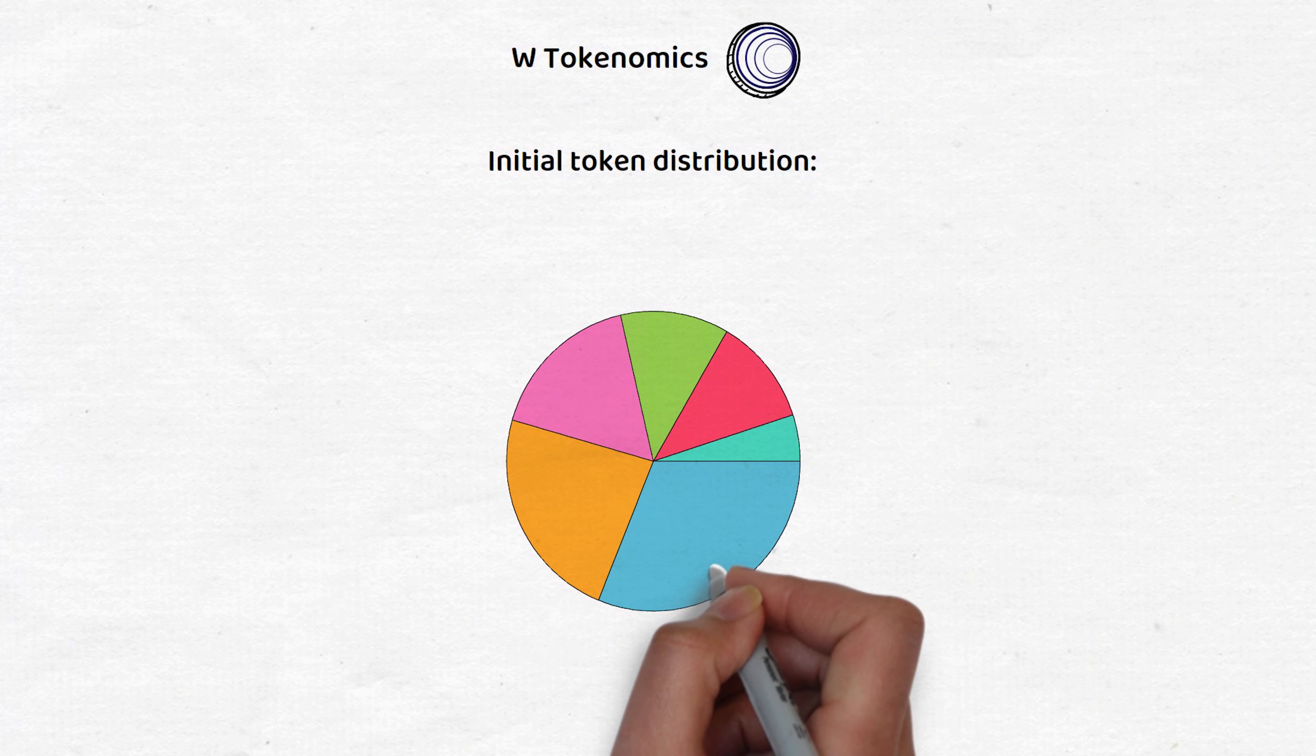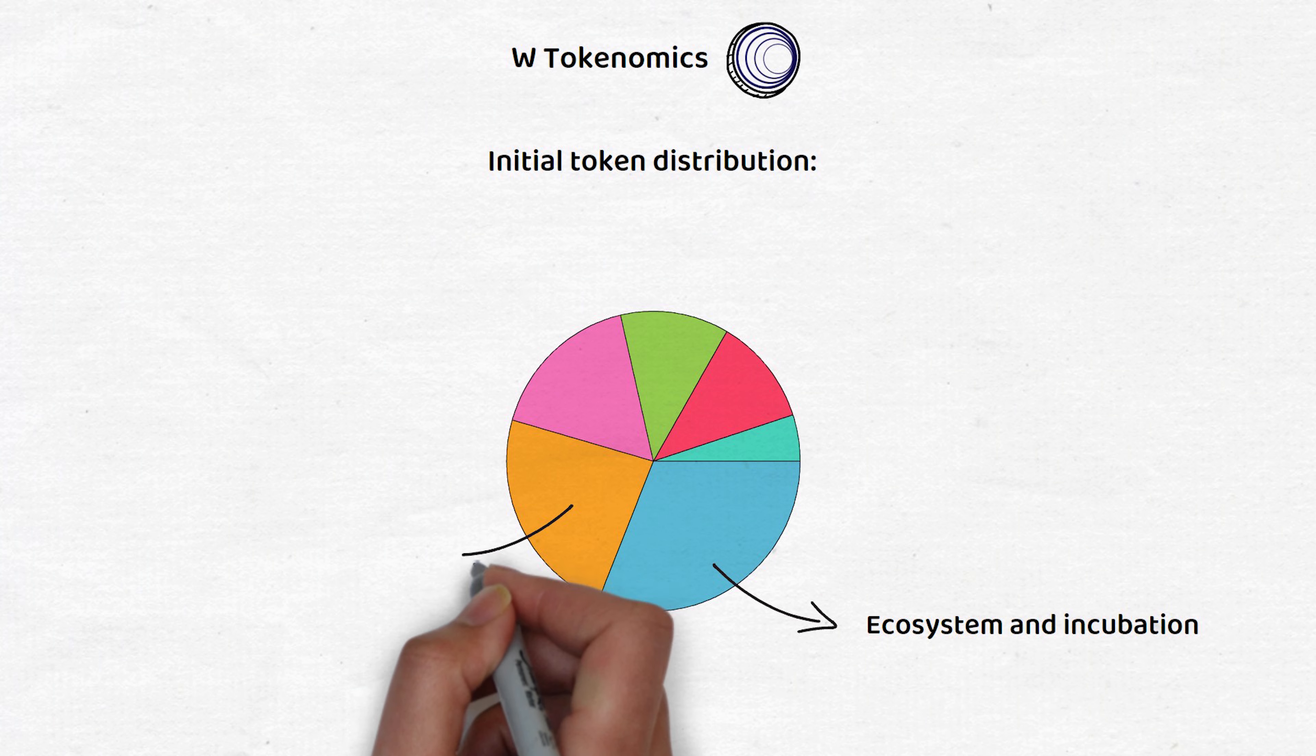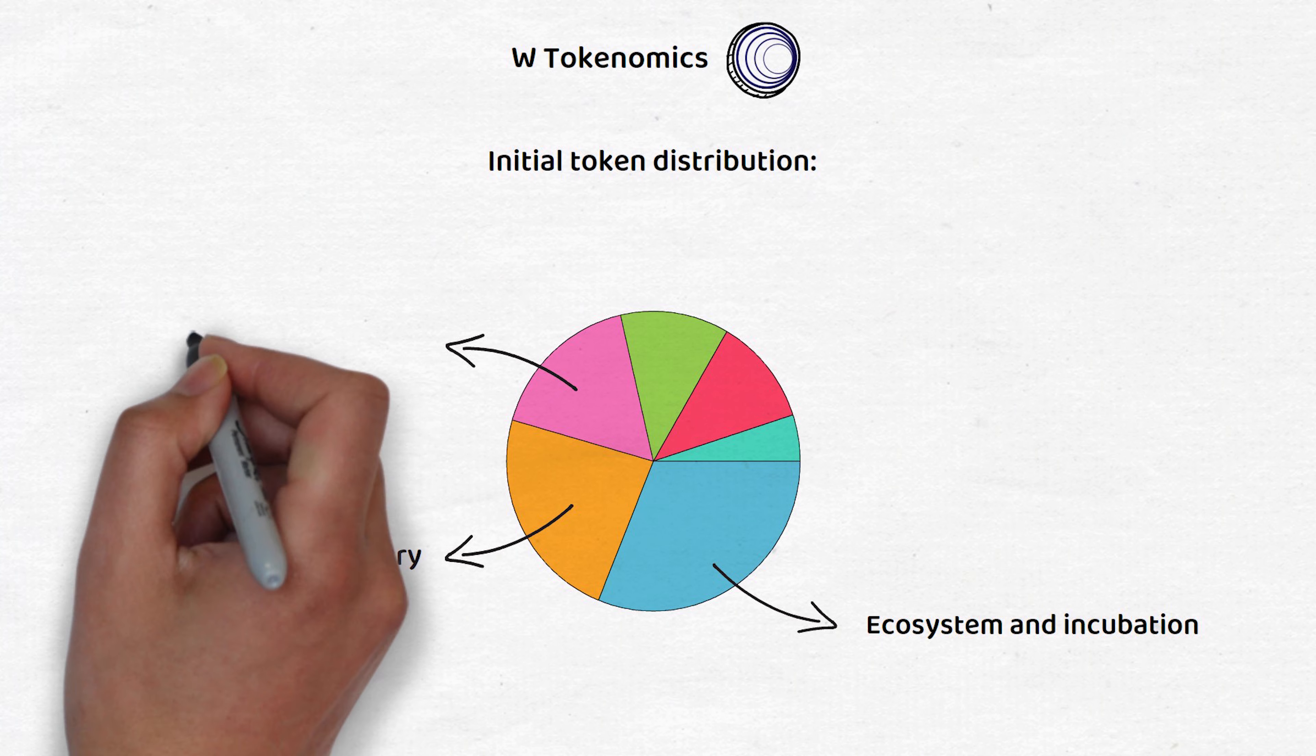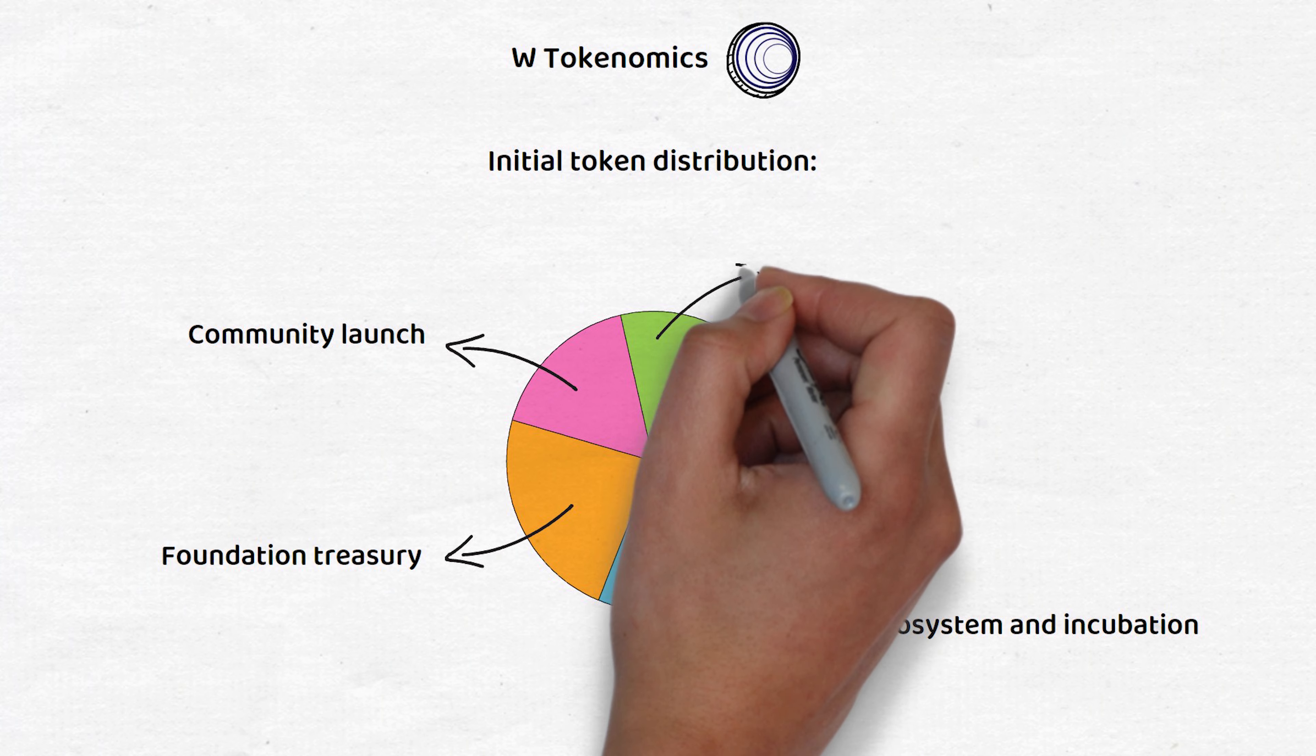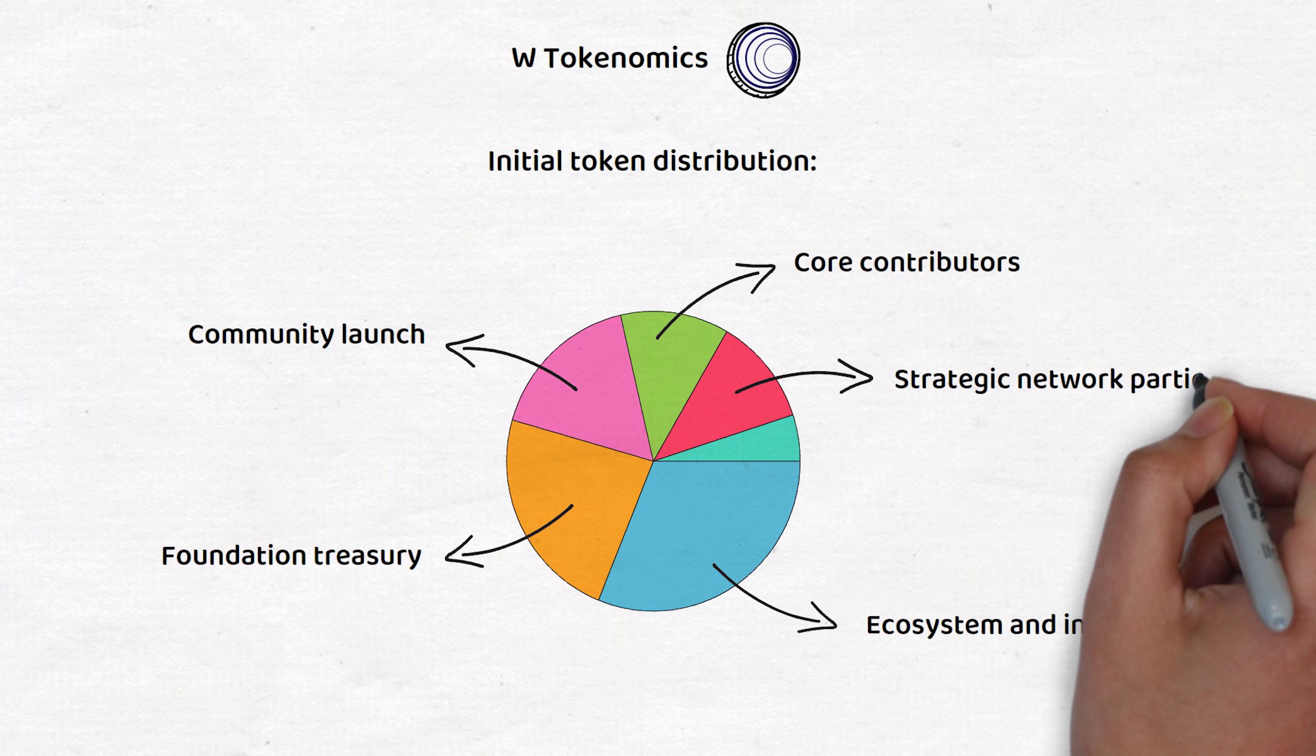31% will go towards ecosystem and incubation, 23.3% will go to the foundation treasury, 17% towards the community launch, 12% to core contributors, and 11.6% to strategic network participants.